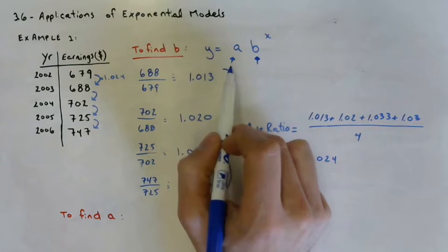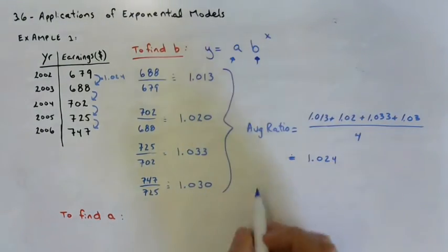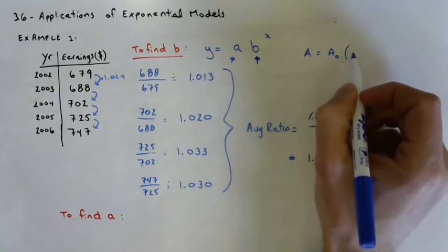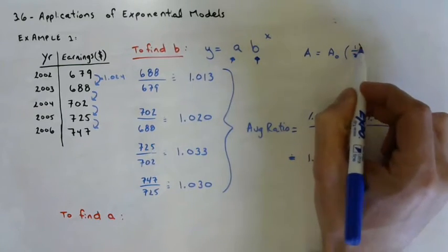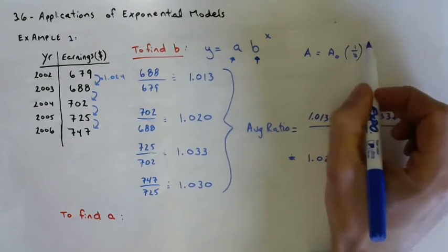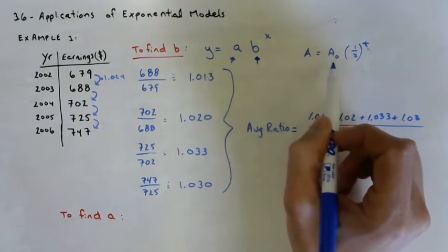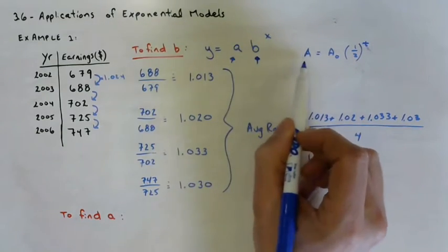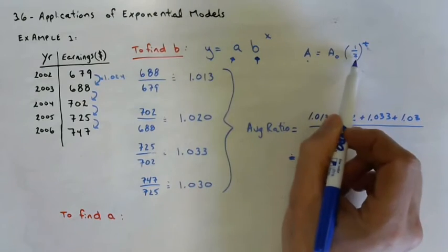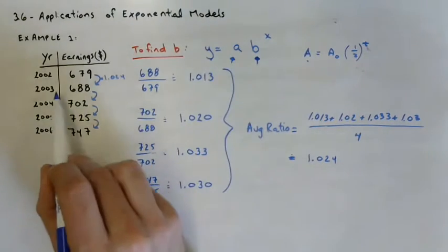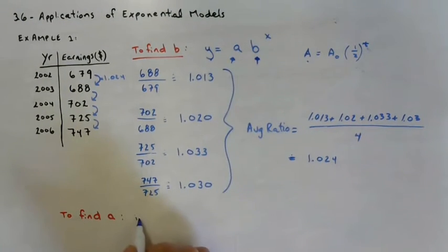In an exponential model, do you remember when we used this formula? Amount equals A0 times the half-life factor or growth factor to the power of T. This is initial amount. So this is actually the exact same formula. Y is A. B is your base. The exponent is there. A0, initial amount. A, in this case, initial population. Well, what is our initial population? 679.